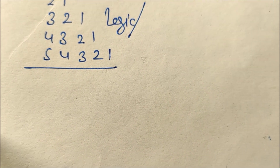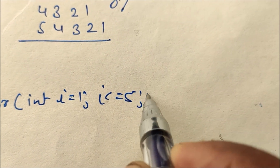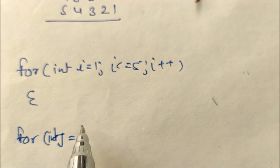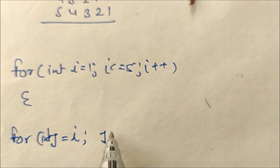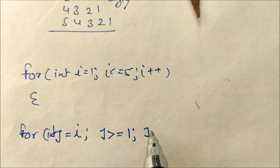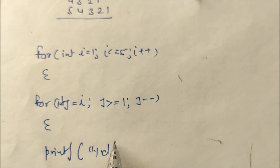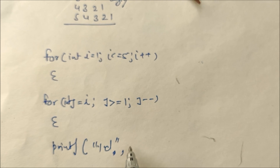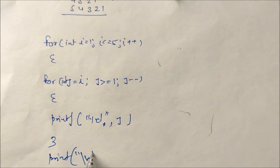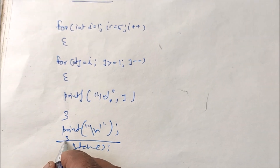For this program we have to write two loops. The outer loop: int i = 1, i <= 5, i++. For the inner loop: int j = i, j >= 1, j--. Then print the j value using printf with %d.